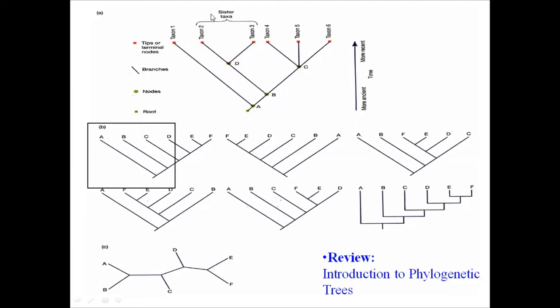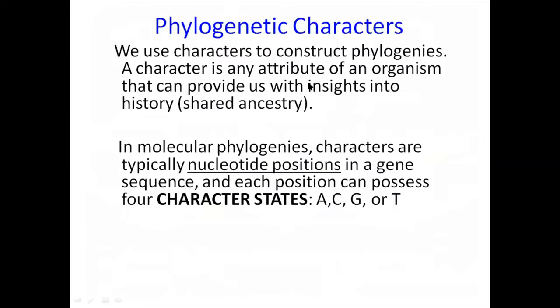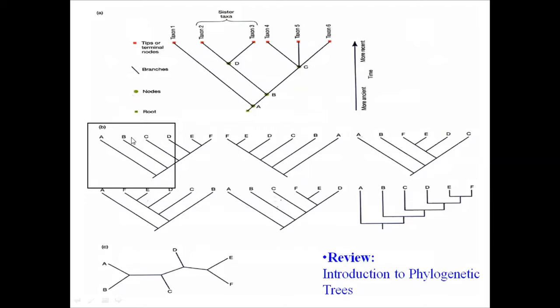There are multiple ways of expressing a phylogenetic tree. Depending on the relationship between characteristics of individual organisms, we can form different phylogenetic tree representations — for example, trees showing a common root followed by branching nodes.